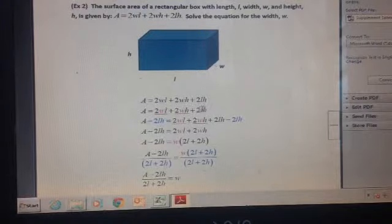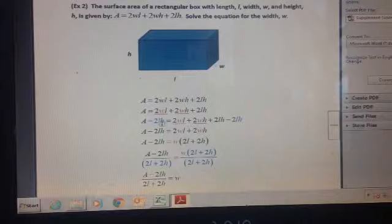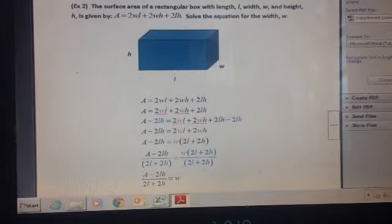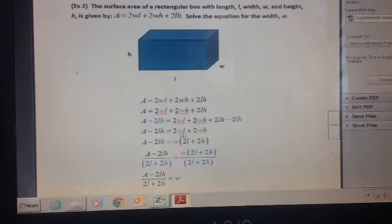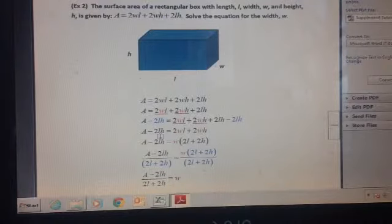I'm adding on this 2lh term, so I want to do the reverse. I'm going to subtract 2lh from both sides. Of course, if I do it to one side of the equation, I have to do it to the other. These two subtract out, and I'm left with 2wl + 2wh = A - 2lh.